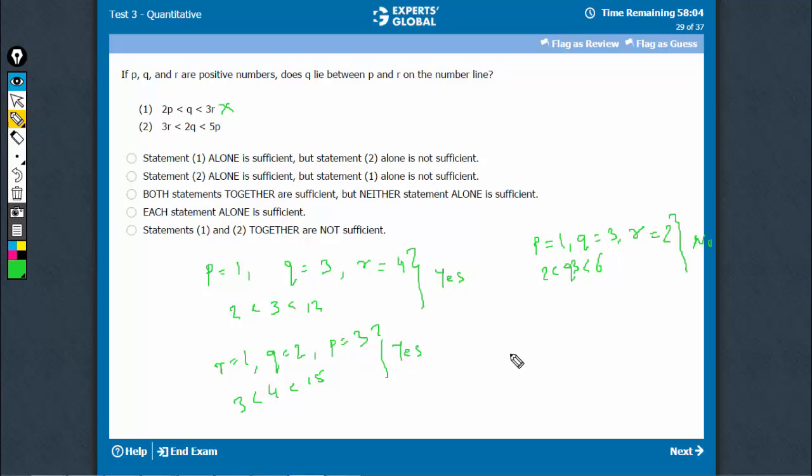However, it's easy to get no as an answer. For example, when r equals 1, q equals 3, and p equals 2. So, see, now q is the largest among the 3, but this would still satisfy. 3r would mean 3, 2q would mean 6, and 5p would mean 10, right? But q is no longer in between p and r. So, in this case also, we get no as an answer. So, yes is possible, no is possible. This alone also does not help.